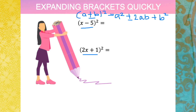Plus the square of the last term. For the expression (x minus 5) squared, we expand it as: the square of the first term is x squared; since the operation is minus, we place minus twice the product of the first and second term — the product of x and 5 is 5x, so twice that is 10x — giving minus 10x; plus the square of the last term, which is 25.